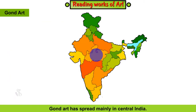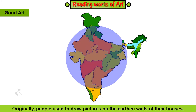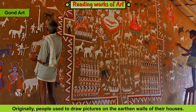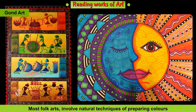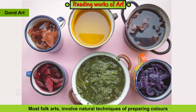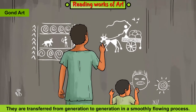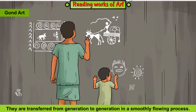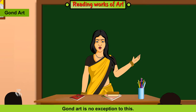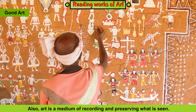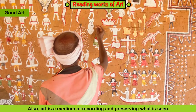Gond Art has spread mainly in central India. Originally, people used to draw pictures on the earthen walls of their houses. Most folk arts involve natural techniques of preparing colours and use of several mediums. They are transferred from generation to generation in a smoothly flowing process. Gond Art is no exception to this. A house decorated with beautiful pictures creates a pleasant atmosphere. Also, art is a medium of recording and preserving what is seen.